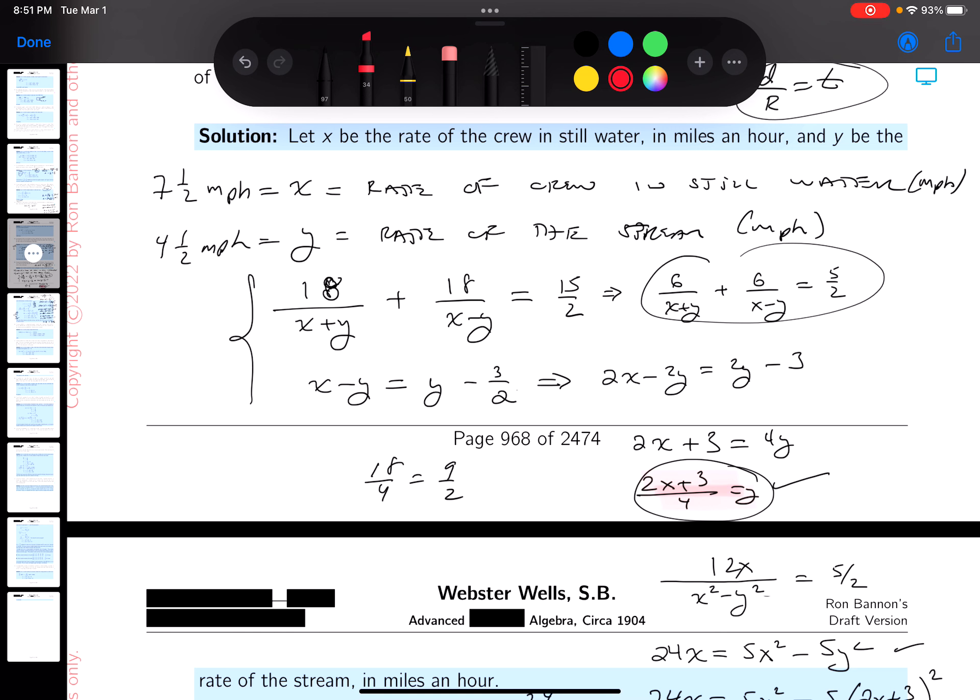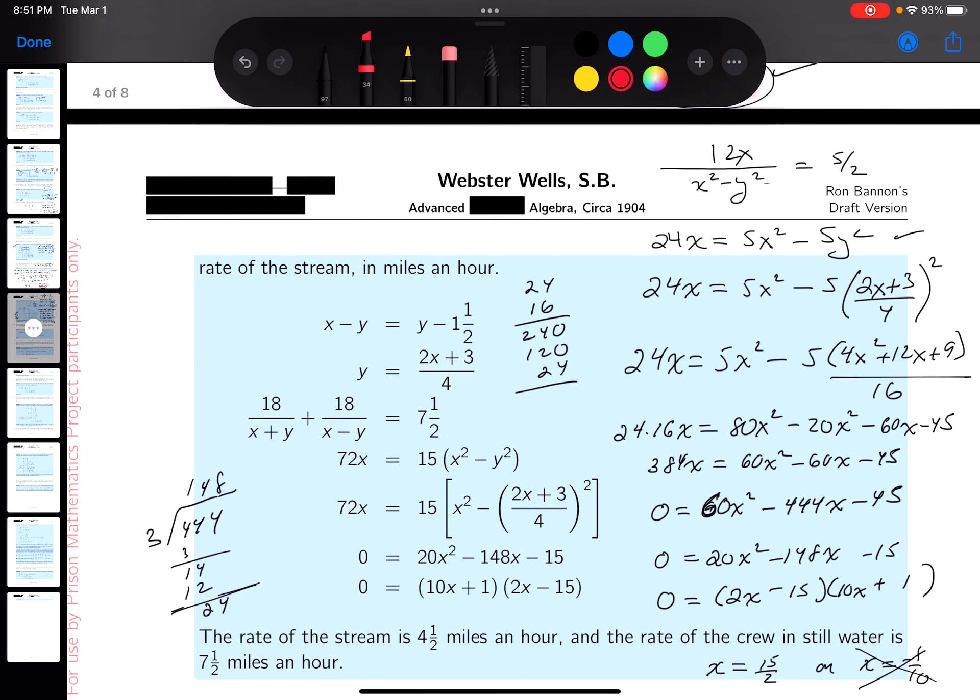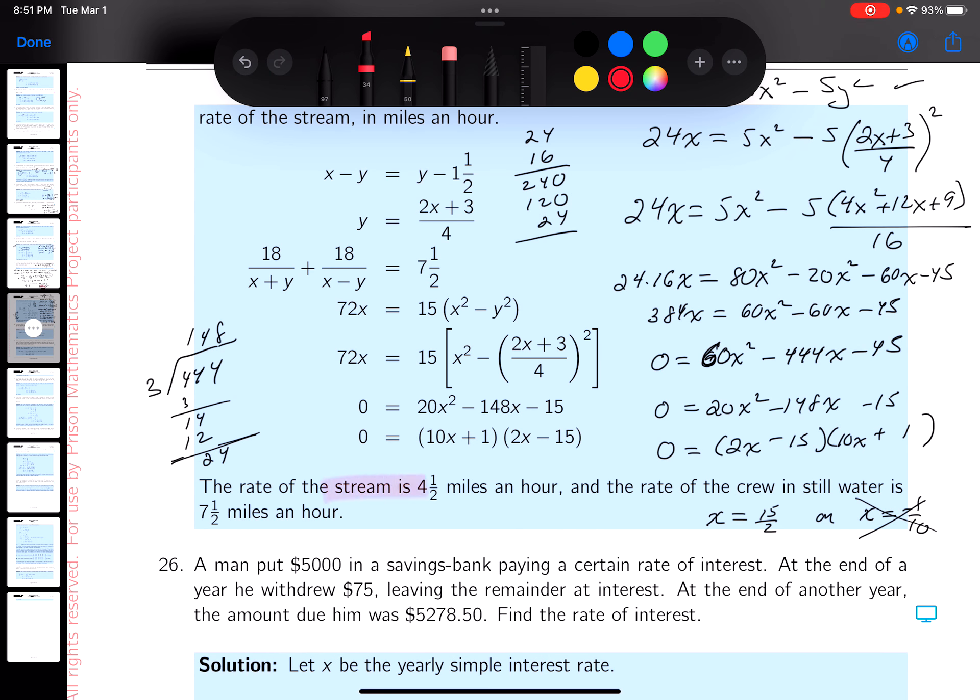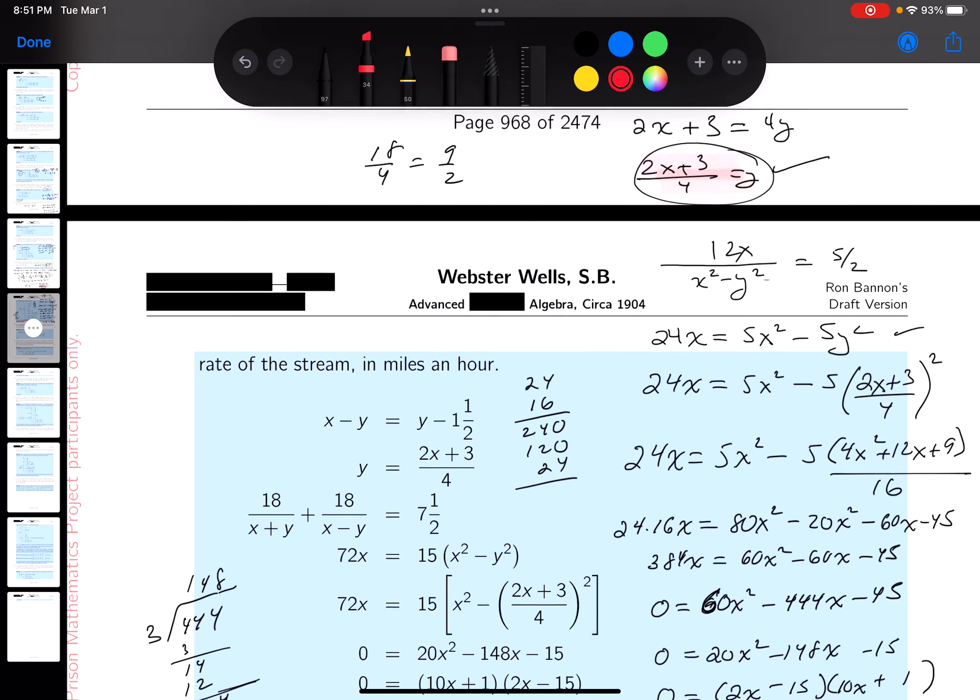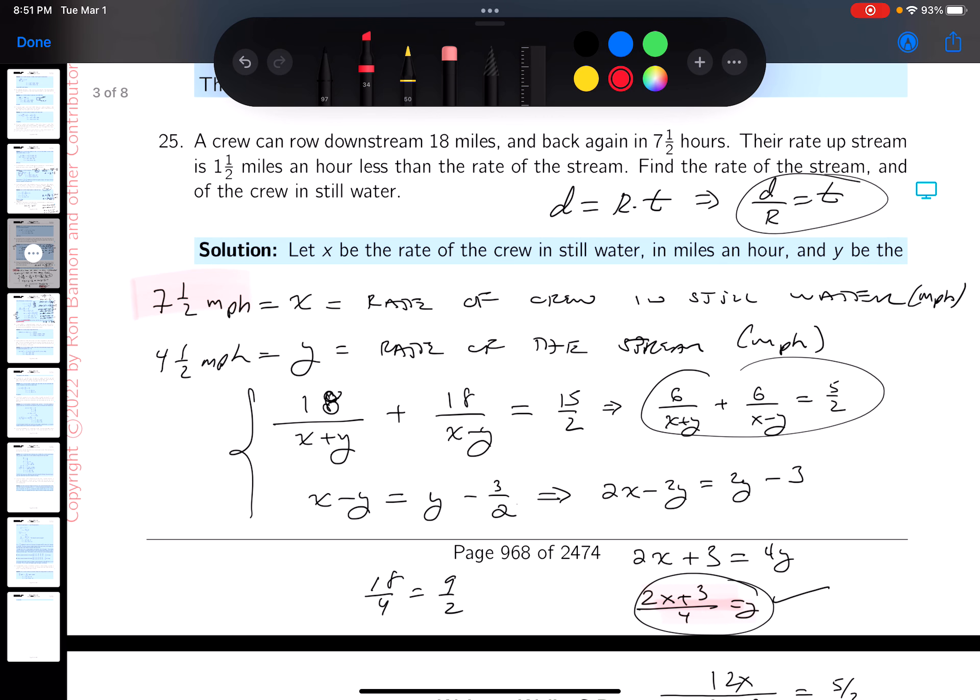Get my red pen out, see if we got that. 4.5 miles per hour for the stream, 7.5 miles per hour for the crew in still water. Exactly what we're getting over here. Not a bad problem.